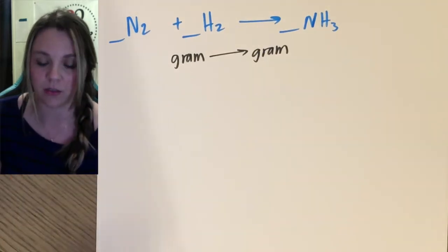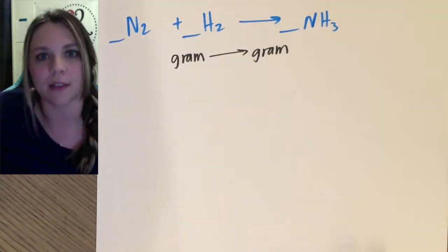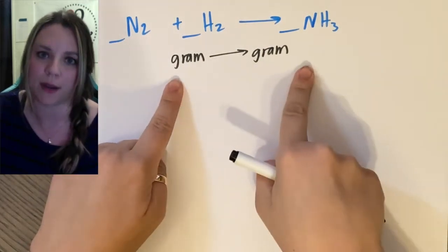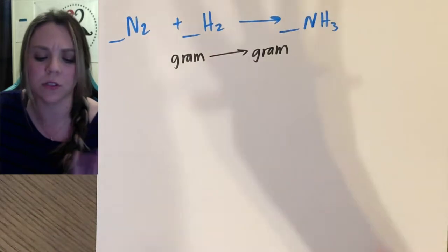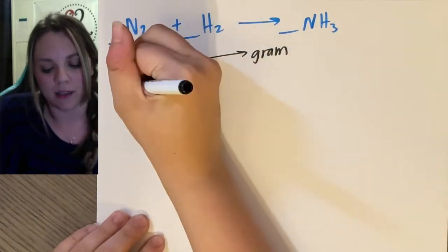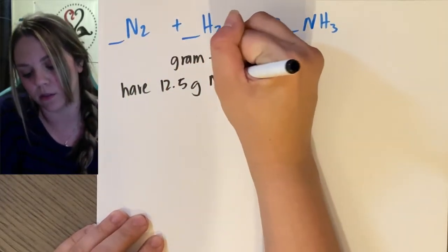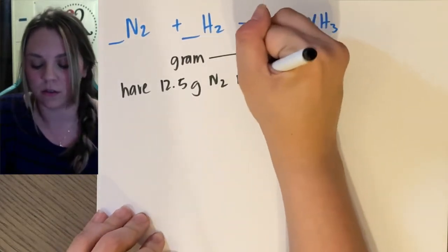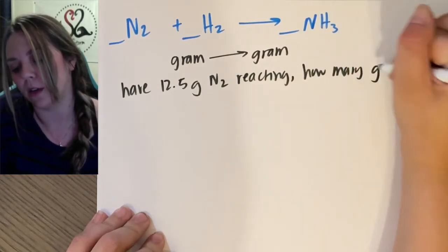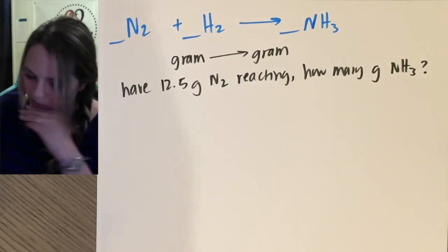Gram to gram is the most common because think about in lab. If I'm in lab I start with a reactant. How do I know how much reactant I start with? I usually walk over to the scale and I mass it. I figure out what's the mass of my reactant. And then I do some kind of chemical reaction, and then I have a product. How do I find out how much product I have? I walk back over to that scale and I mass it. So usually I'm going gram to gram. This is the most typical type of question you might see.